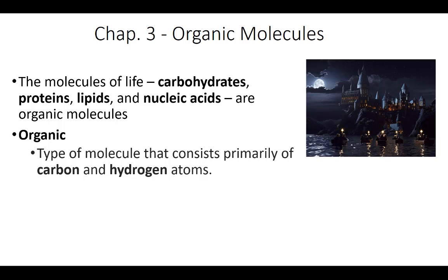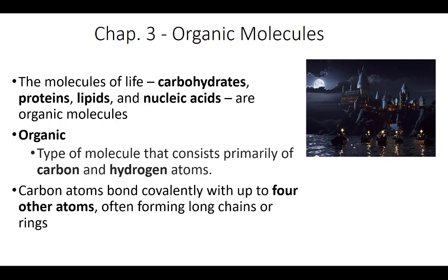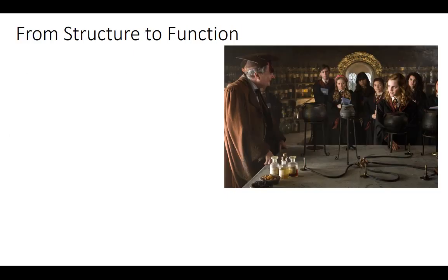Carbon has four electrons in its outer shell — it's kind of in the middle of wanting to bond, so it forms very nice bonds without becoming an ion. It forms covalent bonds, which are pretty strong, which is good because that means we're built from molecules that are pretty well put together. Carbon atoms form covalent bonds with four other atoms, and this generally results in either a long chain or some type of ring that connects back to itself.